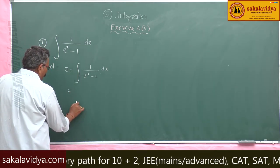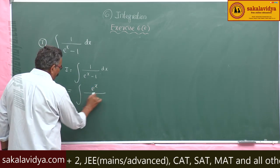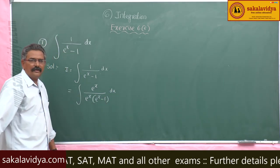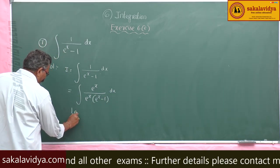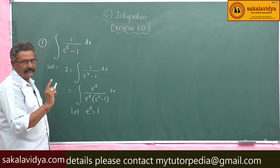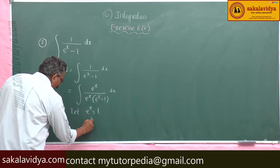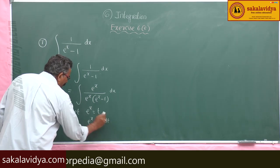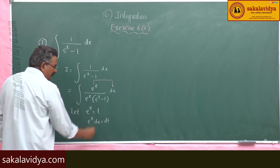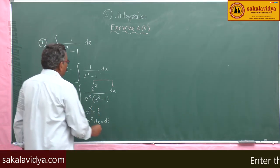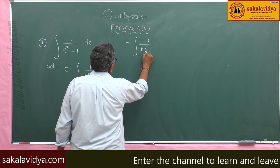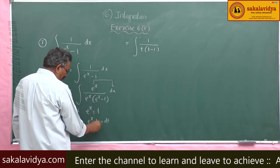So this can be written as integral of eˣ by eˣ(eˣ minus 1) dx. Let eˣ equal t; differentiating both sides, eˣ dx equals dt. So eˣ dx is replaced by dt, giving integral of 1 by t(t minus 1) dt.